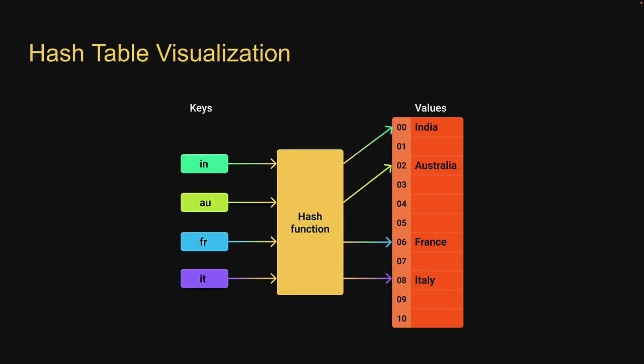Here is a simple visualization of the hash table data structure. You have the keys, which get hashed into an index, and at each index, the corresponding value is stored.